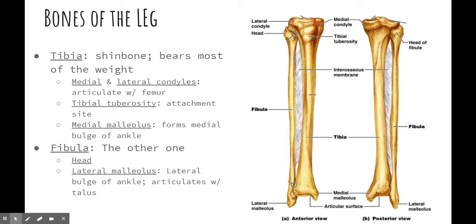The tibia has a few different parts. It has the lateral condyle, which fits with the lateral condyle of the femur, and then the medial condyle, the same thing. Then you have the tibial tuberosity — this protrusion right here — and that is the attachment site for the patellar ligament, the ligament that holds the patella, the kneecap, in place. It attaches right here on the tibial tuberosity.